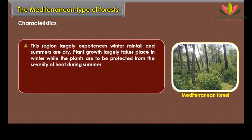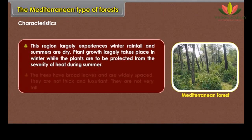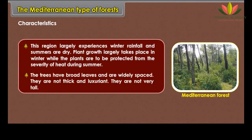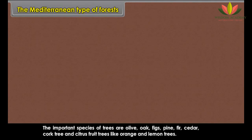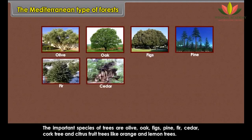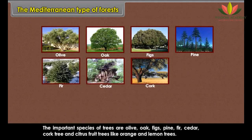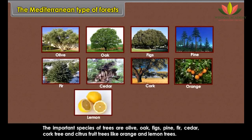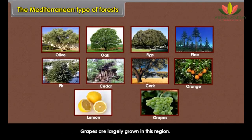Characteristics: This region largely experiences winter rainfall and dry summers. Plant growth largely takes place in winter while plants must be protected from the heat during summer. The trees have broad leaves and are widely spaced — not thick, luxuriant or very tall. The important species of trees are olive, oak, figs, pine, fir, cedar, cork tree and citrus fruit trees like orange and lemon.